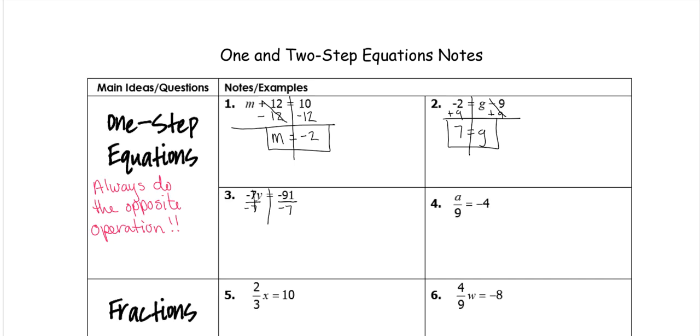This actually gives us 1. Negative 7 divided by negative 7 is 1, which leaves us with just 1y or y. And then negative 91 divided by a negative 7 is a positive 13.